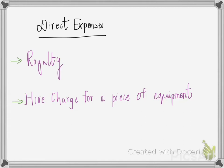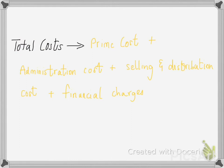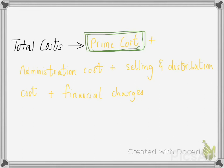There is another thing called total cost. Total cost is made up of prime cost or direct cost, plus administration cost, selling and distribution cost, and financial charges. Prime cost or direct cost is the only component that directly links with the manufacturing account.